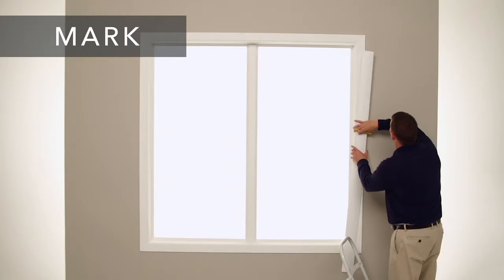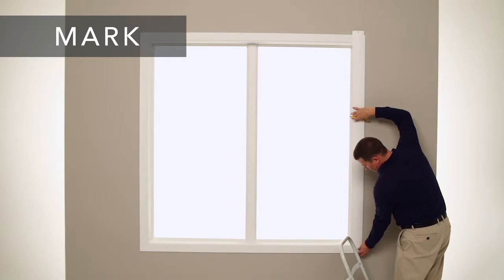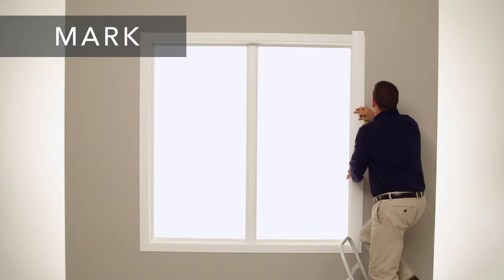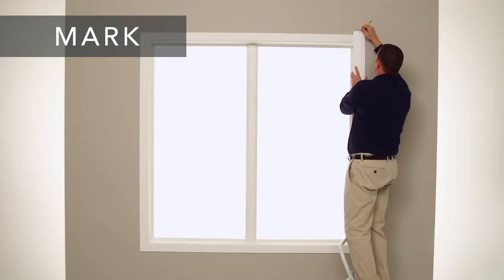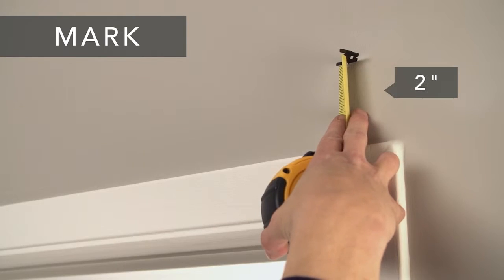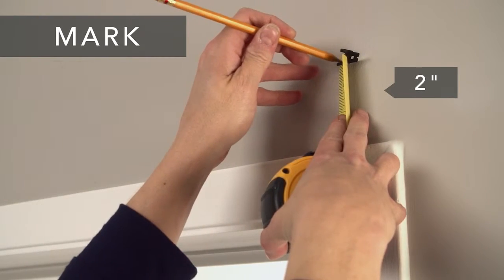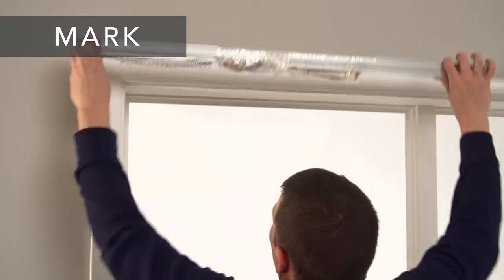Start by determining where to mount the headrail. Take one of the vanes and hold it against the wall with the bottom of the vane at the desired length. Make a mark 2 inches above the top of the vane. Make this mark on both sides of the window.